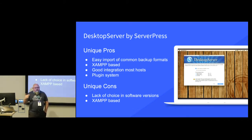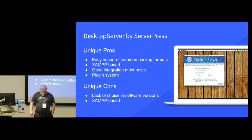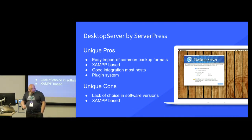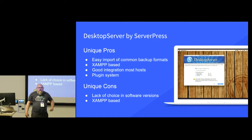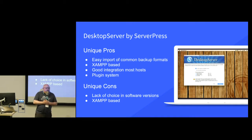Cons: there is a lack of choice in software versions — you don't get to pick your PHP or MySQL. For a long time it ran PHP 5 and everyone was sad, but now they've moved to 7.02 or something like that, so it's much more relevant to modern WordPress hosting. The other con is that XAMPP is old, it's been around many years and has at times not been supported. It is supported now with new versions. But Desktop Server is already aware they need to be thinking ahead to running their own stack and not being based on XAMPP, because it could go away.